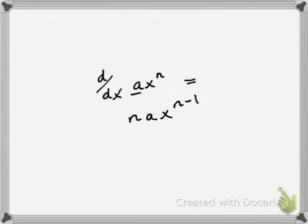The derivative of a power function - to evaluate the derivative, bring the n down and multiply that by the ax, and then reduce the power by 1.